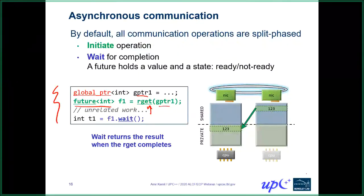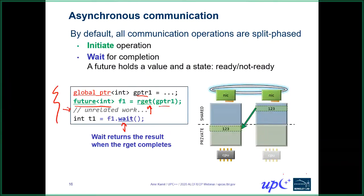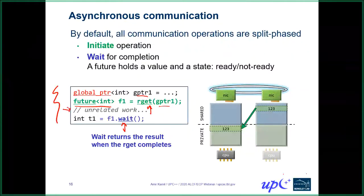Rather than waiting until the transfer is completed, we get a handle to the result. This allows the application to do some unrelated work while that transfer is actually happening. When the application actually needs that piece of data, it can call wait. This wait will wait until the transfer is completed — if it's already completed, we just get the value directly; otherwise, the program waits while making progress internally until the transfer completes.